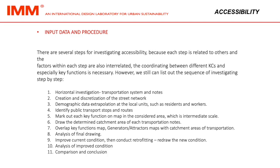We can list out the sequence of investigating step by step: 1. Horizontal investigation — transportation system and nodes. 2. Creation and discretization of the street network. 3. Demographic data extrapolation at the local units such as residents and workers. 4. Identify public transport stops and routes. 5. Mark out each key functional map in the considered area at intermediate scale. 6. Draw the determined catchment area of each transportation node. 7. Overlap key functions map, generator and attractor maps with catchment areas of transportation. 8. Analysis of final drawing. 9. Improve current condition then conduct retrofitting.